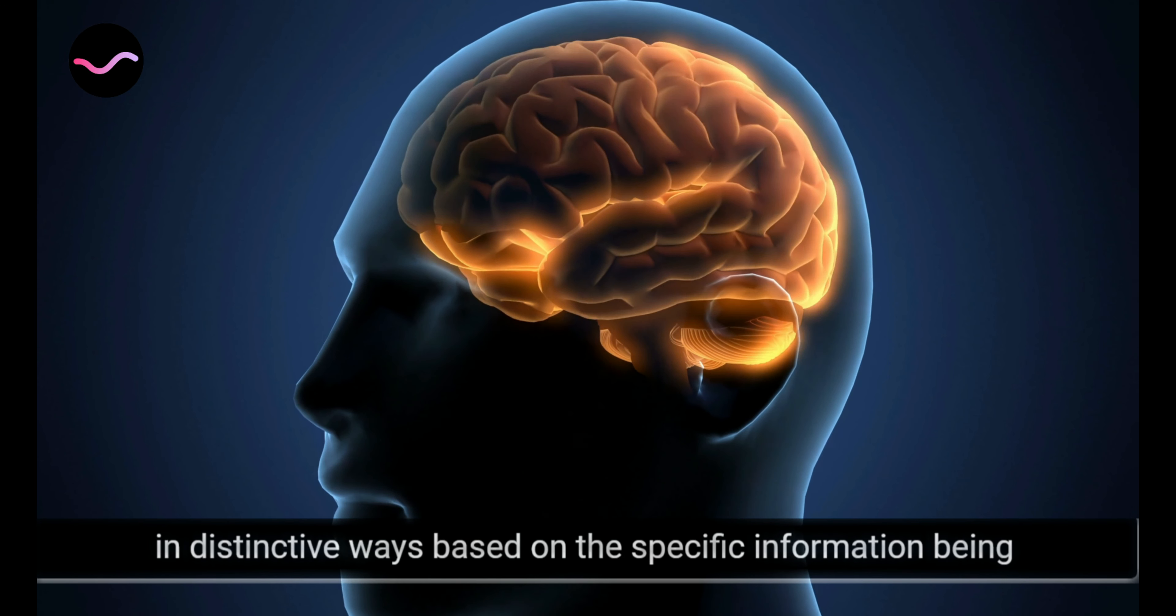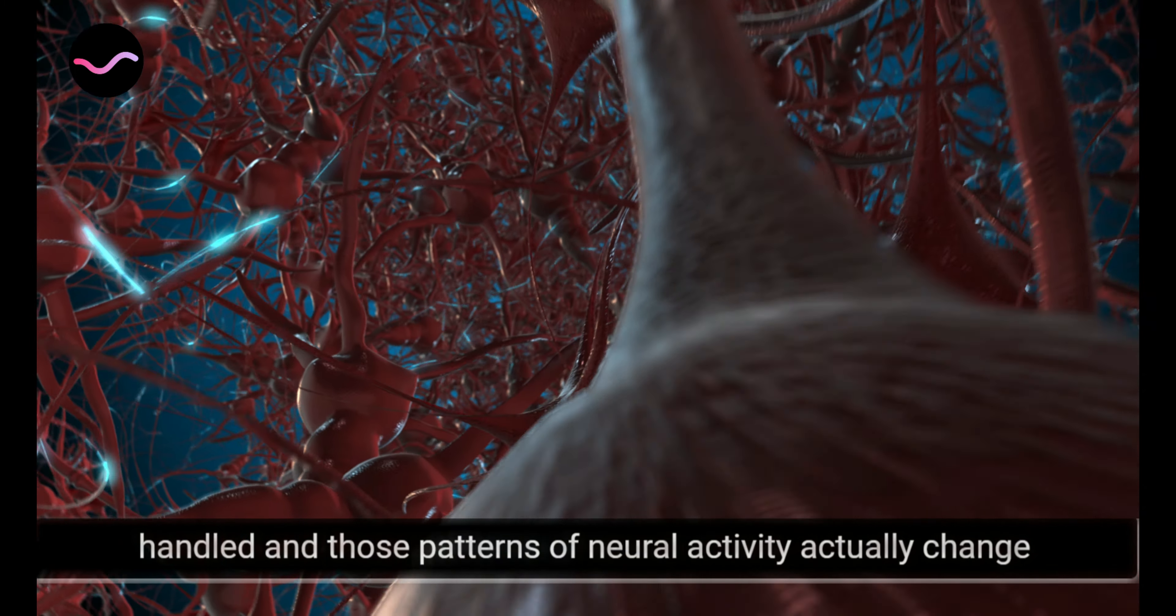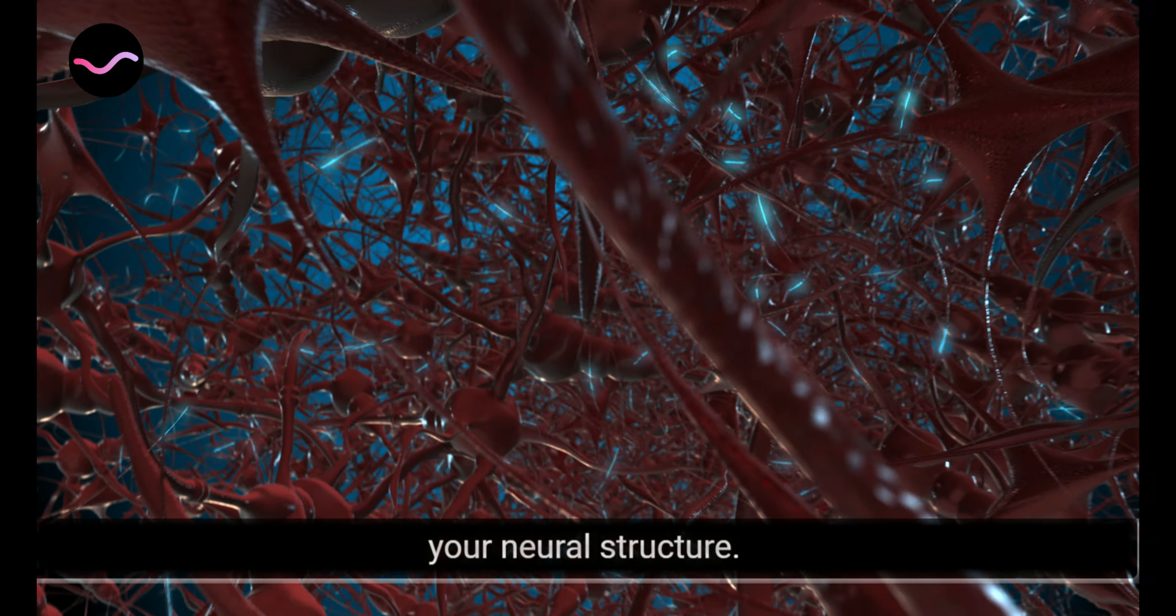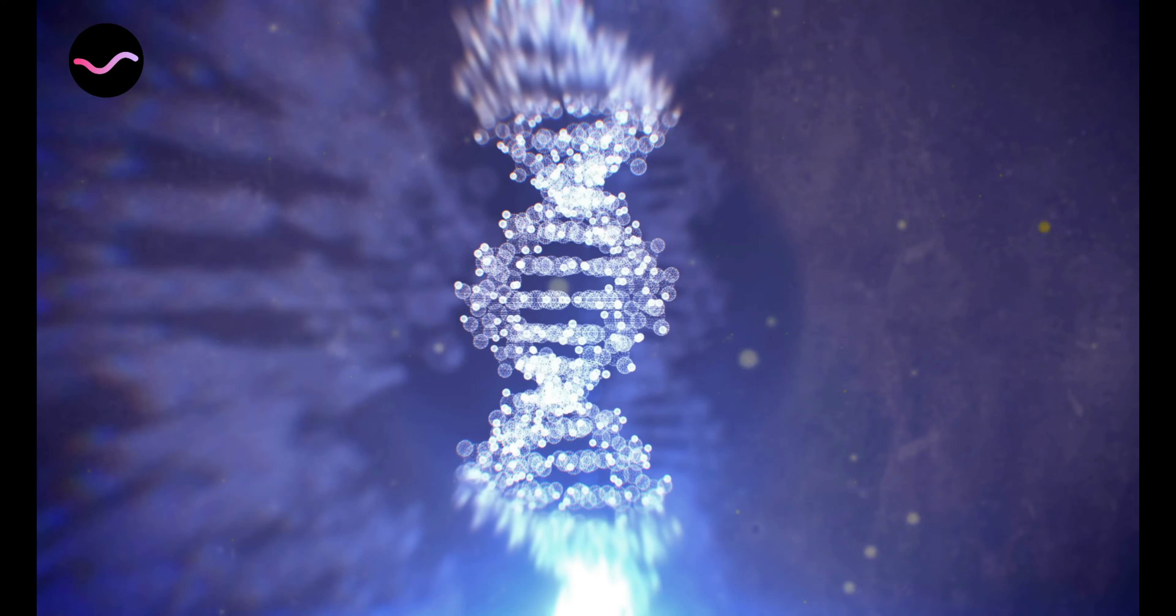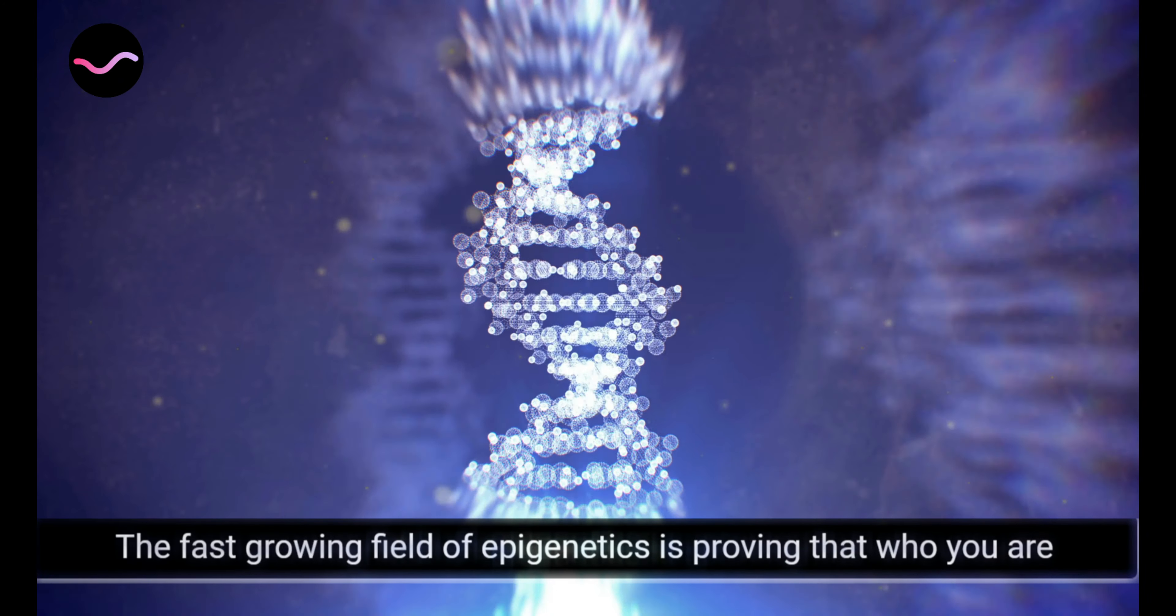As a thought travels through your brain, neurons fire together in distinctive ways based on the specific information being handled, and those patterns of neural activity actually change your neural structure. You're speaking to your genes with every thought you have.